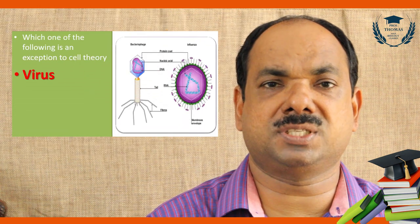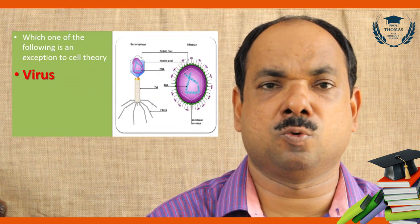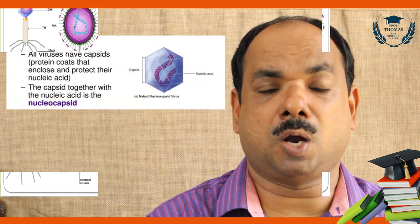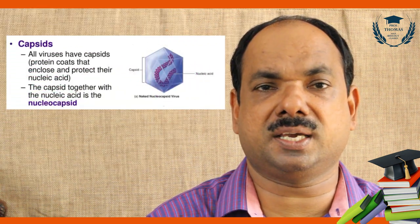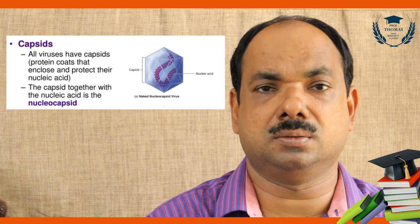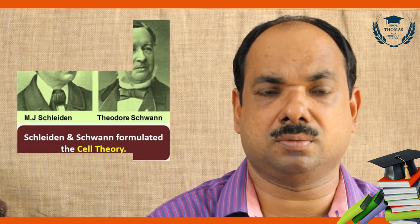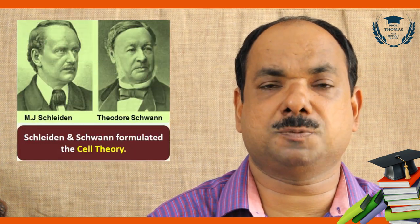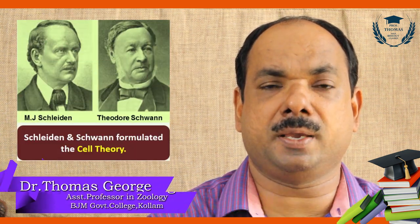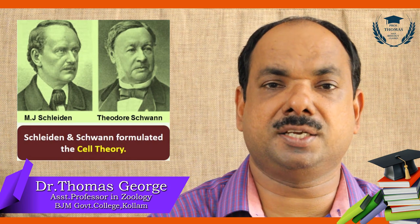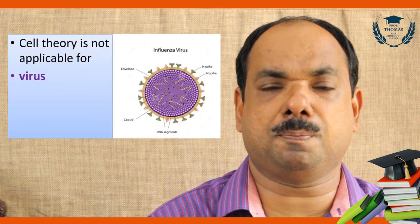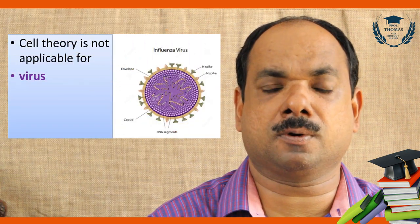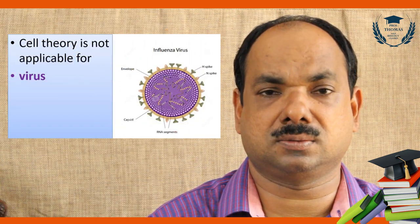The exception of cell theory is the virus. The outer covering of the virus is called the capsid, and its basic unit is the capsomere. Cell theory was proposed by Schleiden and Schwann. Cell theory is not applicable to viruses.